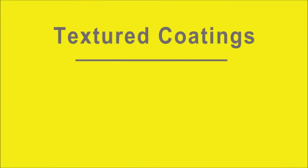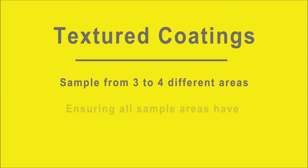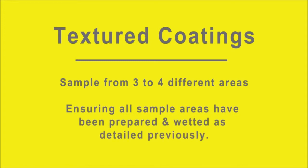If sampling textured coatings, take samples from 3 to 4 different areas of the wall or ceiling being sampled to ensure the sample is representative of the whole area, ensuring that all sample areas have been prepared and wetted as detailed previously.